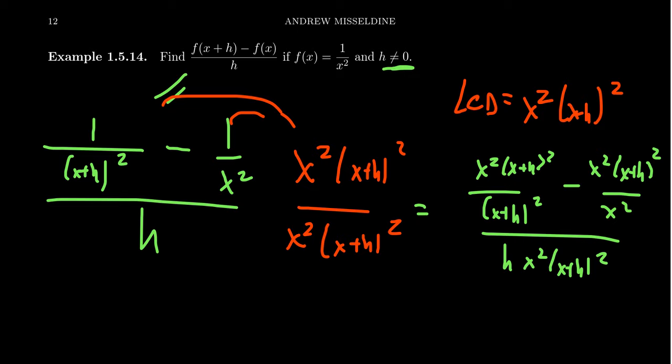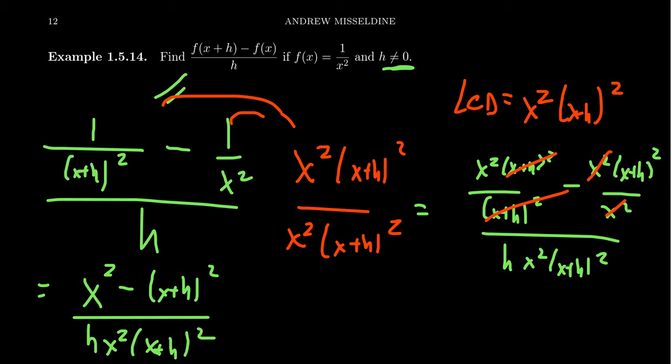Now you'll notice in the numerator, if you look at the baby fractions, there's an (x+h)² and (x+h)² that cancel out. With the second baby fraction, there's an x² and x² that cancel out. And so now the baby fractions all moved out of mom's basement and we're left with x² - (x+h)². This sits above our very unfactored denominator, hx²(x+h)².